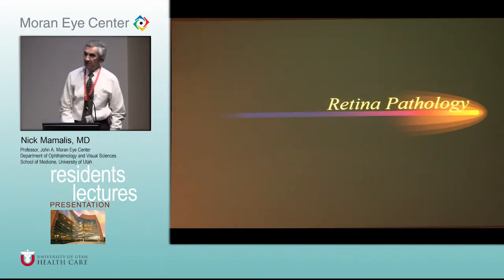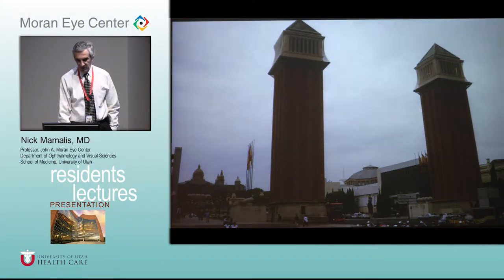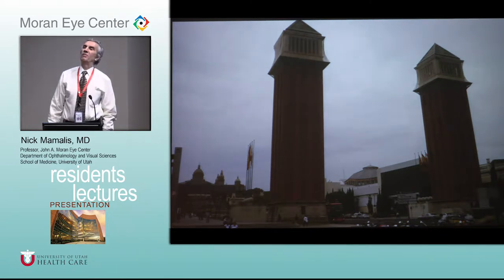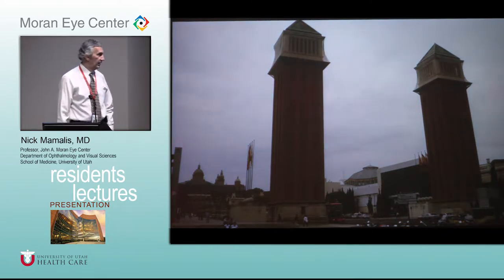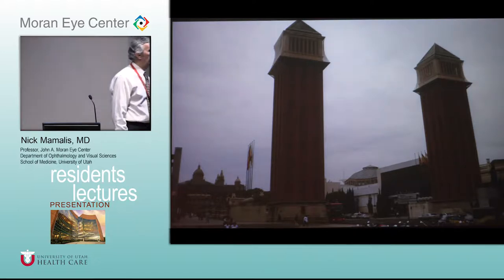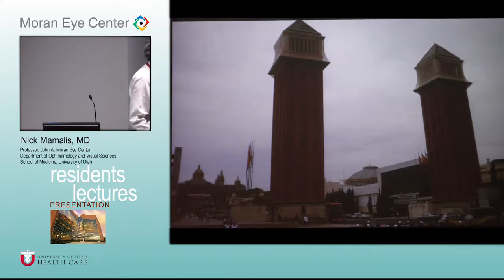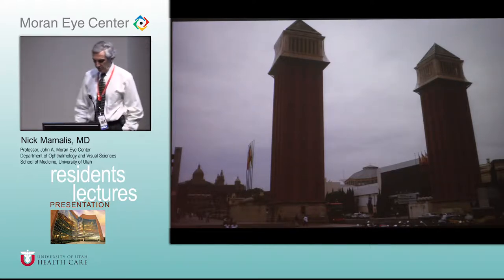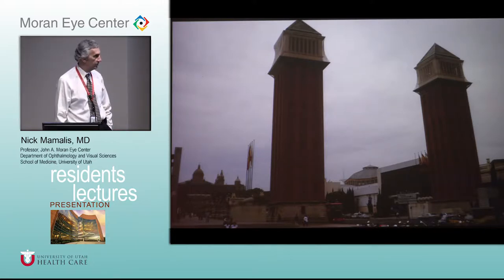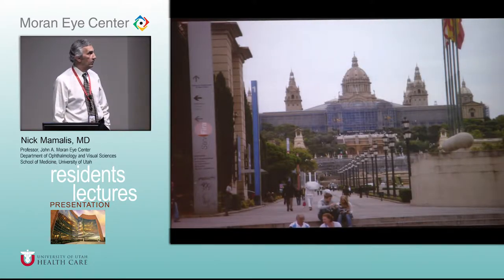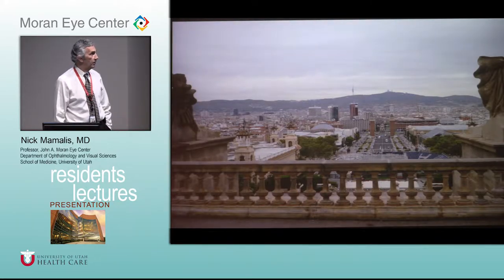All right, you guys ready for retina? But first we have to go to Barcelona. You may have seen when the Tour de France finished — they did a little bit around Barcelona once. They did a bunch of laps around here. This is the National Museum up there on the hill. I'm not sure what these two pillars do but they're pretty cool, and there's a bunch of bikes racing around them. That's the National Museum.